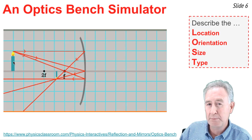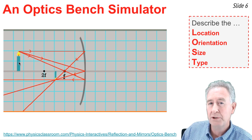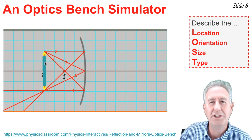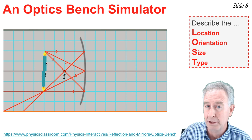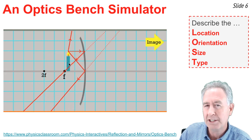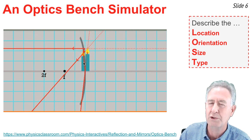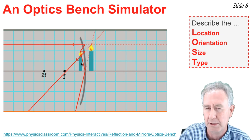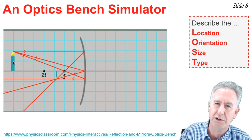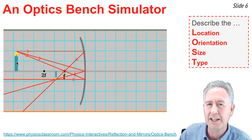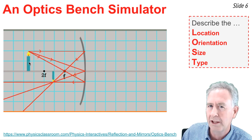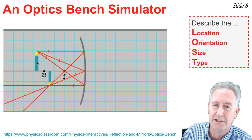This is an optics bench simulator found on our website. There are two candles: the larger one above the principal axis is the object candle, and the other is the image — a replica produced by the convergence of light rays. I'm going to take the object and slowly move it closer and closer to the mirror. As I drag it towards the center of curvature — two focal lengths from the mirror — the image is always located between the center of curvature and the focal point, always inverted, reduced in size, and real.